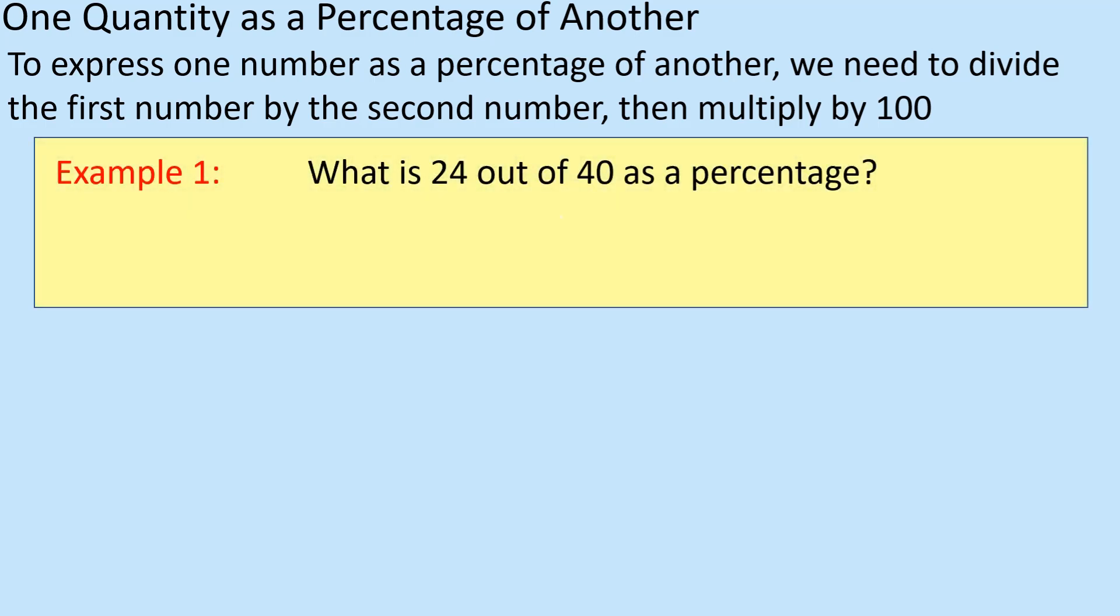So if I say 24 out of 40, as a fraction is 24 over 40, obviously if I'm doing the calculation, so it's 24 divided by 40, it equals 0.6, and then of course as a percent, you just times it by 100. As straightforward as that really.